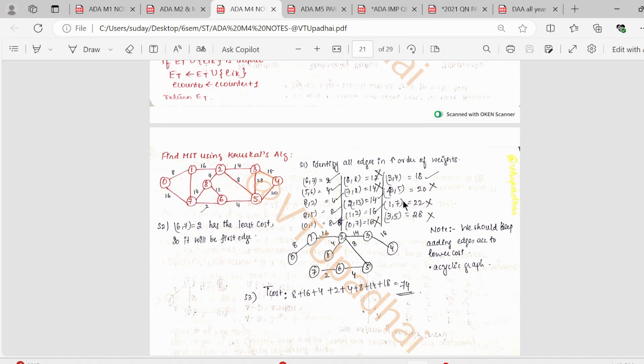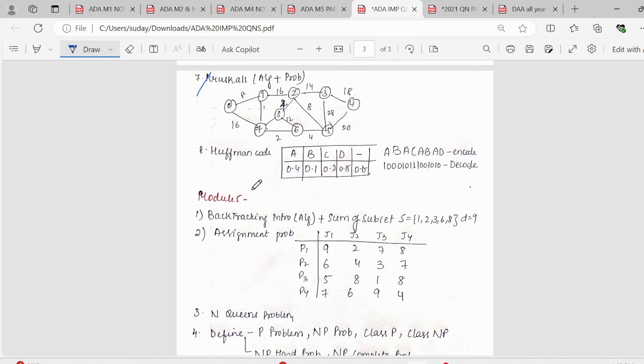So I would suggest you to solve the Kruskal's method over any of the other techniques. So if you see here, it is very easy. I've just arranged in increasing order and then I selected the ones which do not form cyclic graph. Moving on further, Huffman's code, this is a standard question again. So we have to encode for a given character and decode a set of numbers.